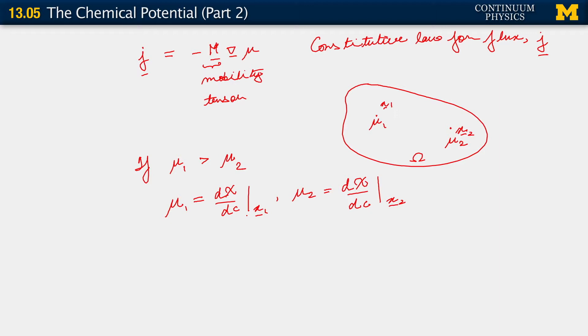What if mu 1 is greater than mu 2? It says that for every little bit of concentration or material that we add at the point x1, the free energy change is greater than if we add the same amount of concentration at the point x2. So in some sense, the point x1 is energetically more expensive than x2.